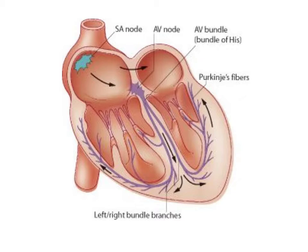The SA node's auto-rhythmic cells have the fastest pace, so they are the ones that create your heart rate. The SA node sends the signal to the AV node, which then sends it down the bundle of His to the Purkinje fibers. The Purkinje fibers spread the signal upward and cause contraction of both ventricles, so that blood rushes up into the aorta and out throughout the body — or in the right side's case, into the pulmonary circulation.